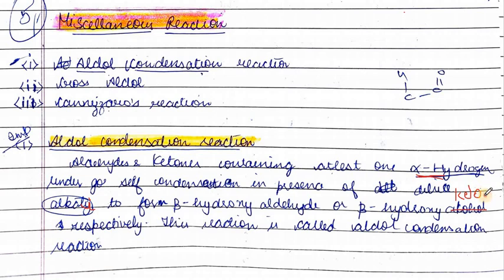Formaldehyde and benzaldehyde cannot give this reaction. Aldehydes and ketones only with alpha hydrogen atoms can undergo self condensation in the presence of dilute alkali to form beta hydroxy aldehydes or beta hydroxy ketones respectively. This reaction is called aldol condensation.